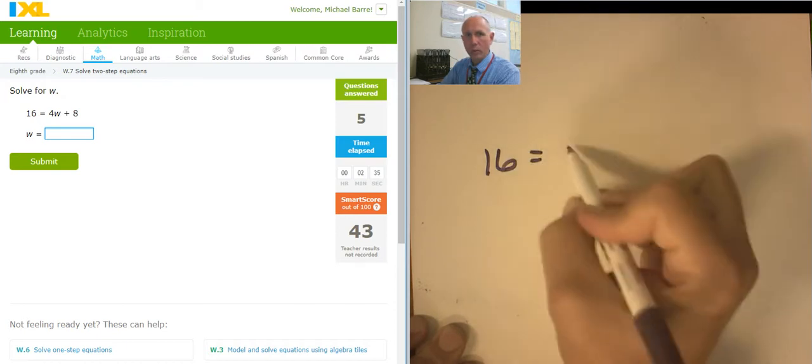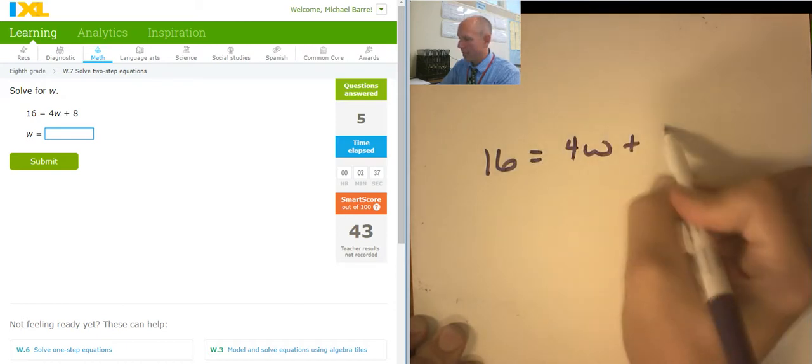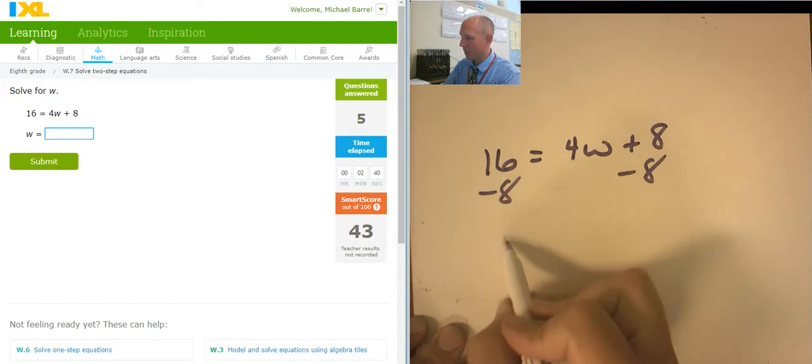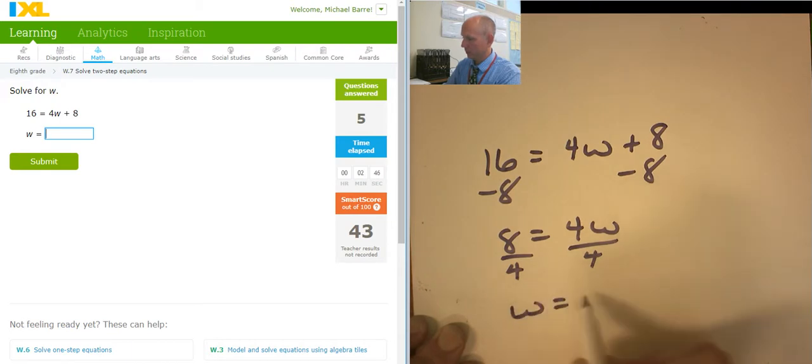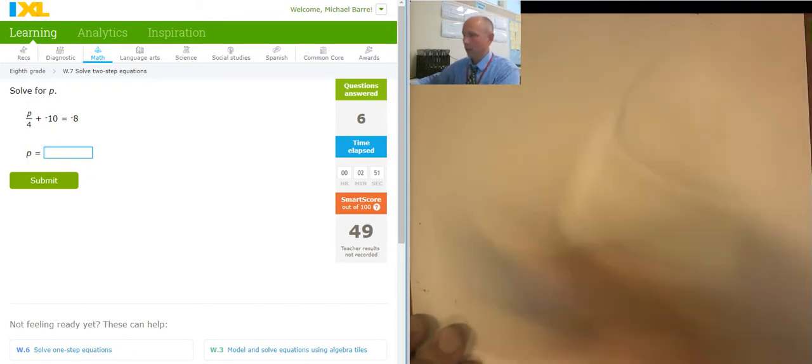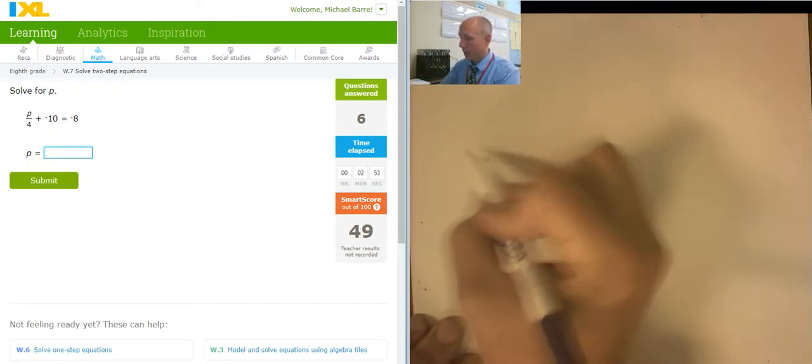16 equals 4w plus 8. I would like to subtract 8 from both sides. I would like to divide both sides by 4. 16 equals 4. That's right. All right. Good. I like this one.